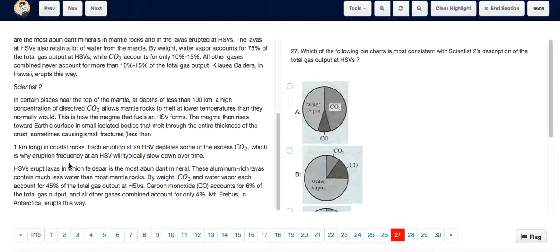For question 27, we go through scientist 2's description of the total gas output at HSVs, which can be found towards the end. It says that by weight, carbon dioxide and water vapor each account for 45% of the total gas output.